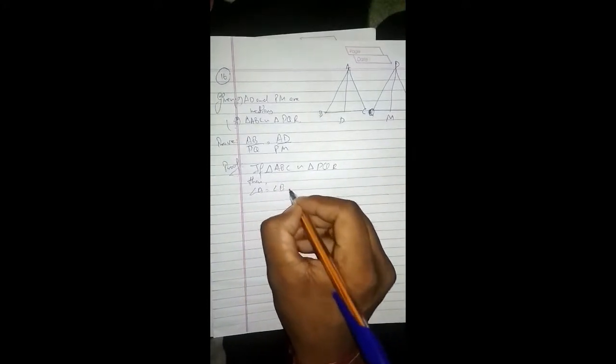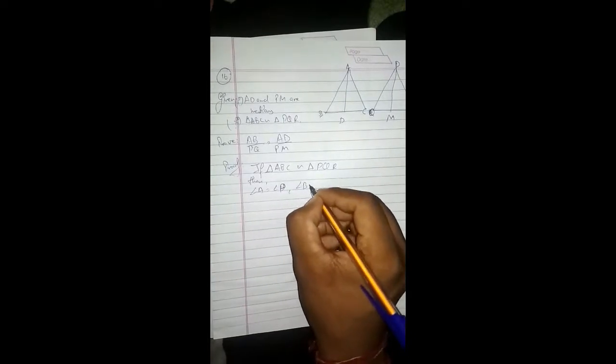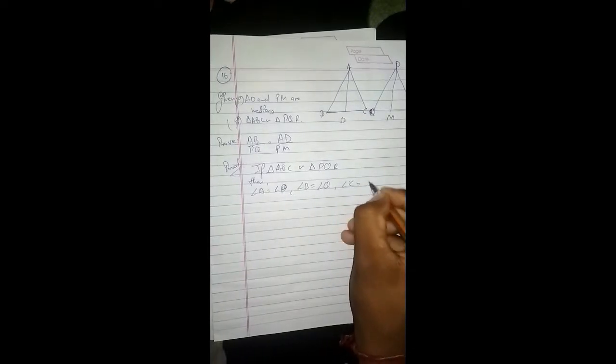angle A is equal to angle P, angle B is equal to angle Q, angle C is equal to angle R.